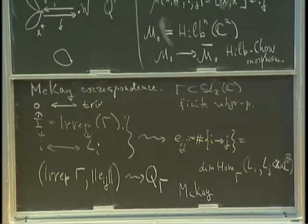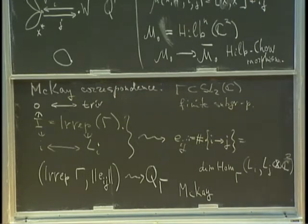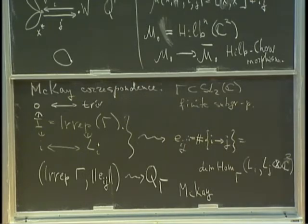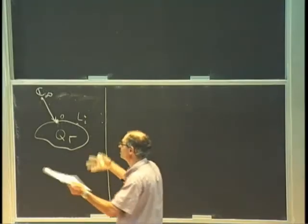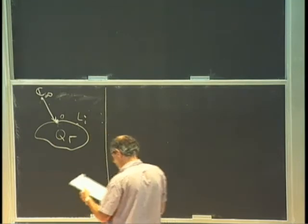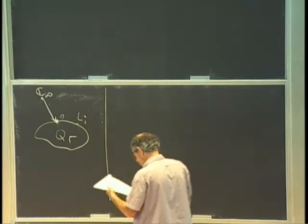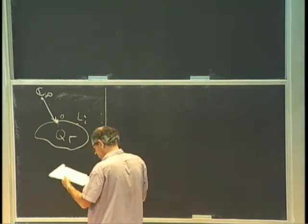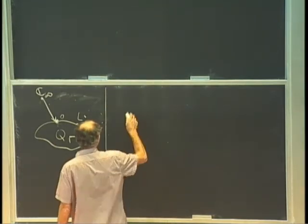This would be thought of as a sort of partner of this quiver. A loop with one edge — there's no analog of Dynkin diagram of type A naught, but there is an analog of affine A naught, and this is what it is. So I am extending from that node to other affine Dynkin diagrams.